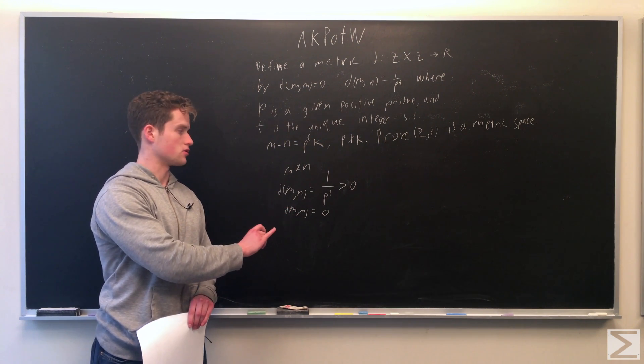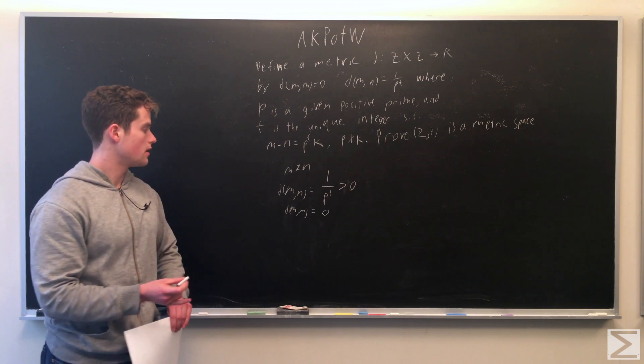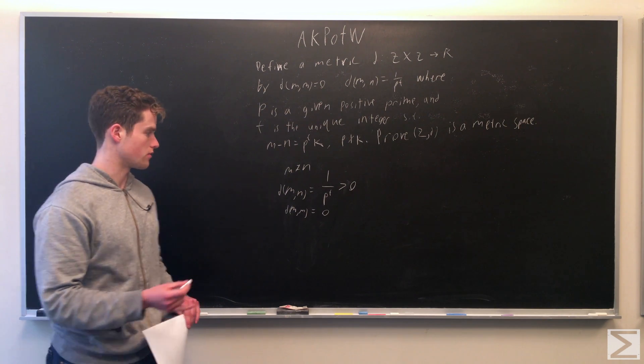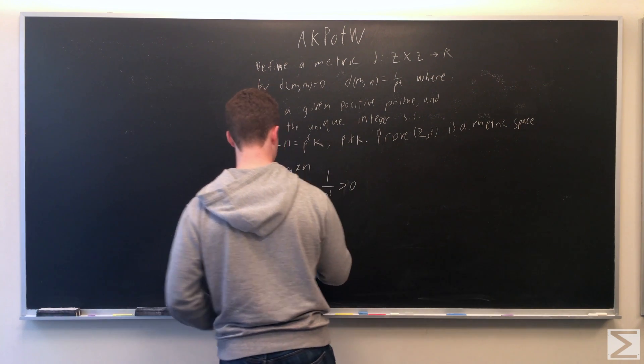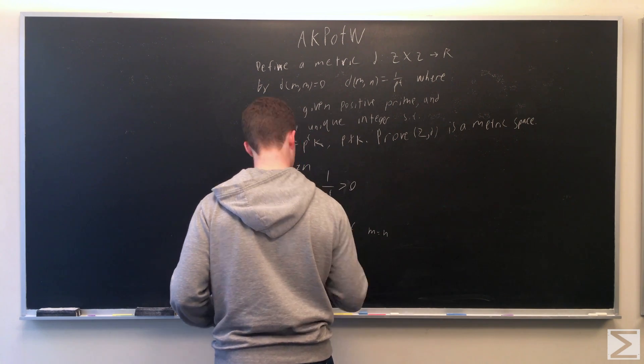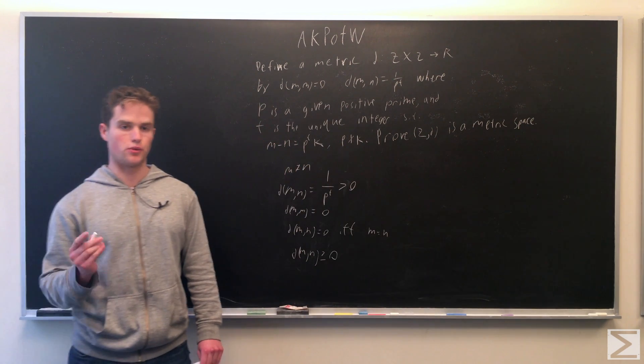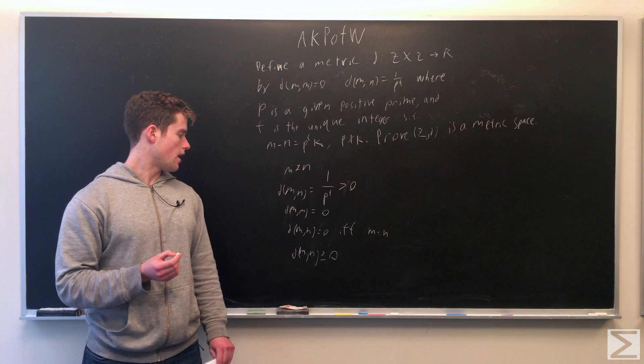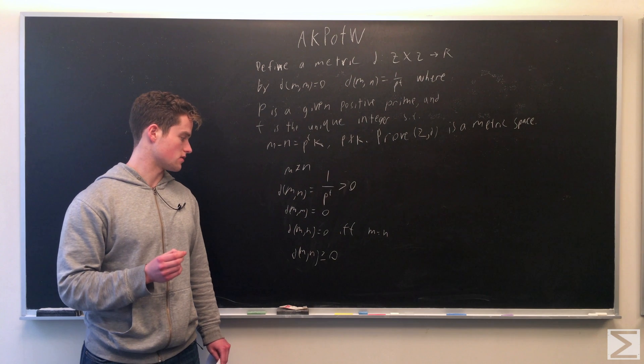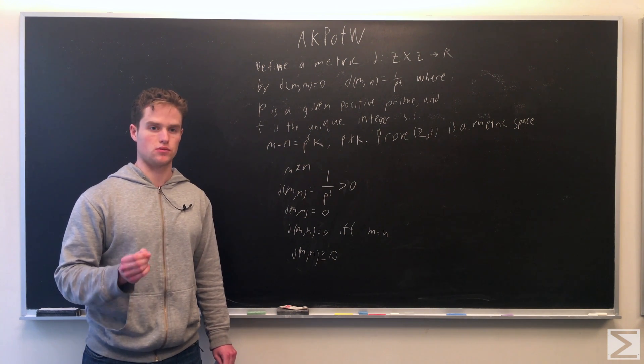Also the distance between m and m itself is zero. So from this we can conclude two of the axioms of a metric space: the distance between m and n is zero if and only if m equals n, and also the distance between m and n is always greater than or equal to zero.